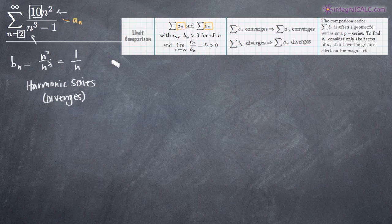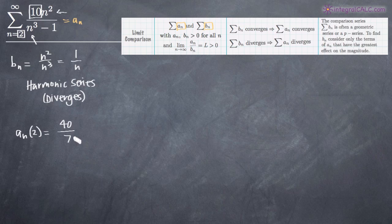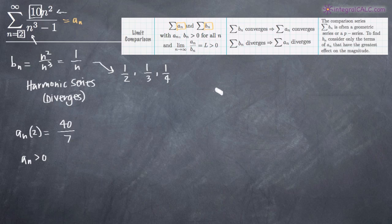For a sub n, if we plug in the number 2, we get 10 times 2 squared which gives us 40 in the numerator, and 2 cubed minus 1 equals 7 in the denominator — so 40 over 7. If we continue plugging in 3, 4, 5, 6 — positive numbers — the numerator is always positive and the denominator is always positive, so a sub n is always greater than zero. Similarly, for b sub n starting at n equals 2, we get one half, then one third, one fourth, et cetera — always a positive number. So b sub n is also greater than zero.